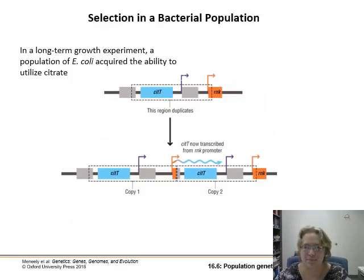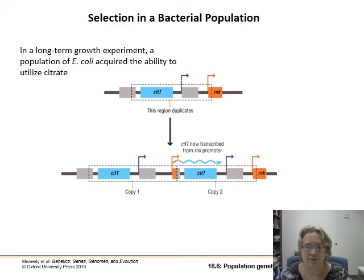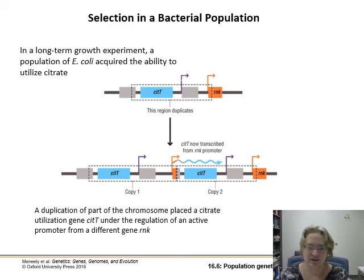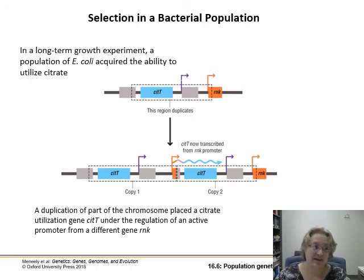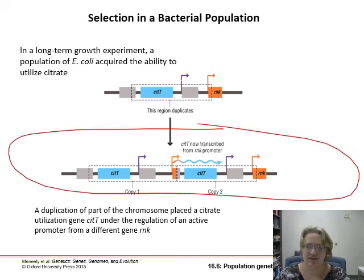In bacteria, genetic drift and inbreeding can drive an isolated subpopulation away from a good adaptive peak toward something else. Selection in bacteria occurs via mutations and horizontal gene transfer — conjugation, transduction, and transformation. In a long-term E. coli growth experiment, a population acquired the ability to utilize citrate through a gene duplication that placed the citrate utilization gene under the regulation of a better promoter. After this event, that new copy really took off in the population, demonstrating that natural selection is very much at work in bacteria, just through different mechanisms than sexual recombination.